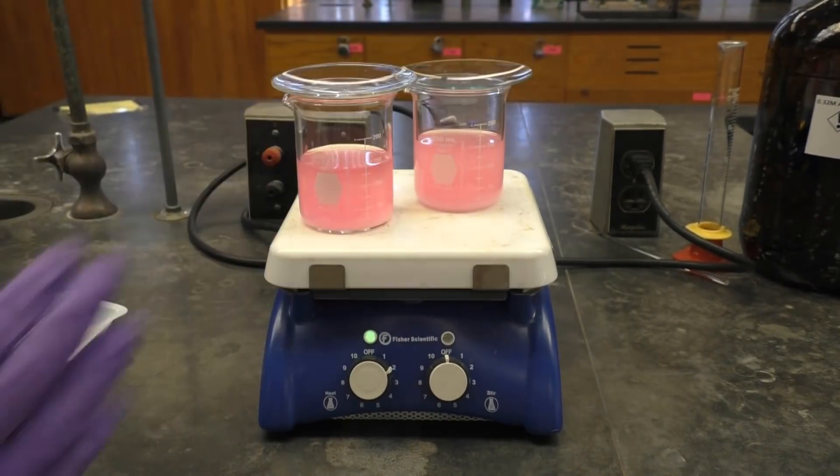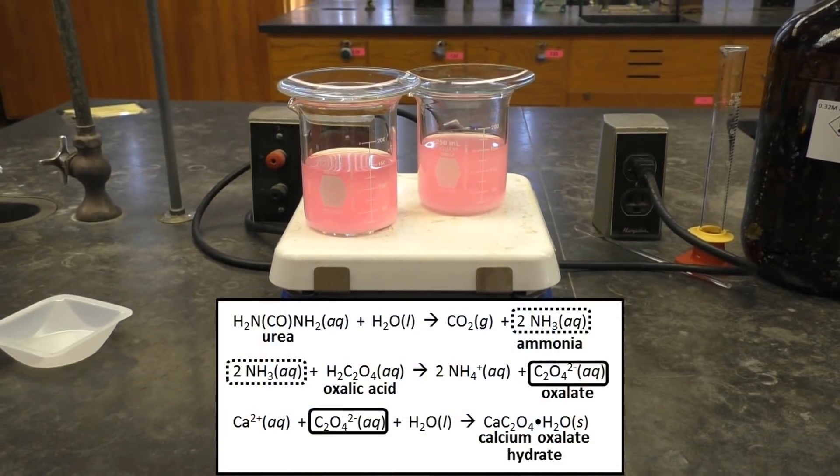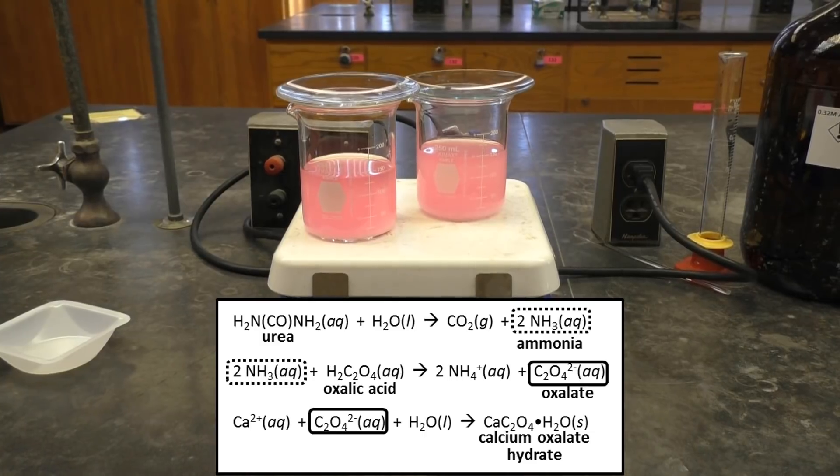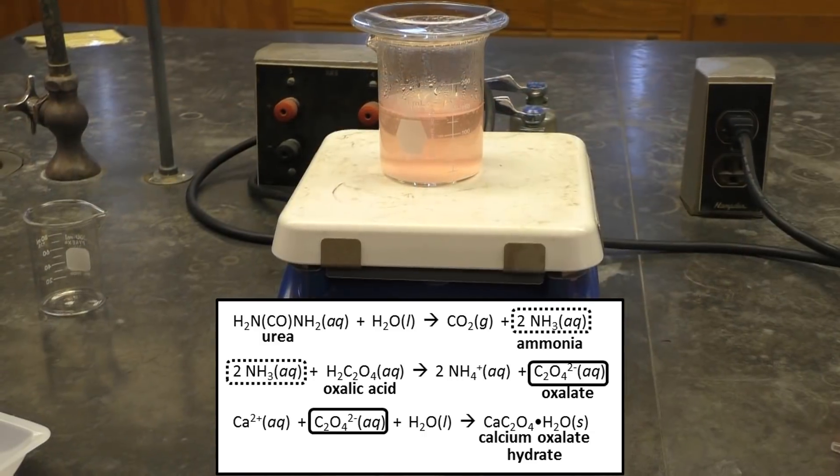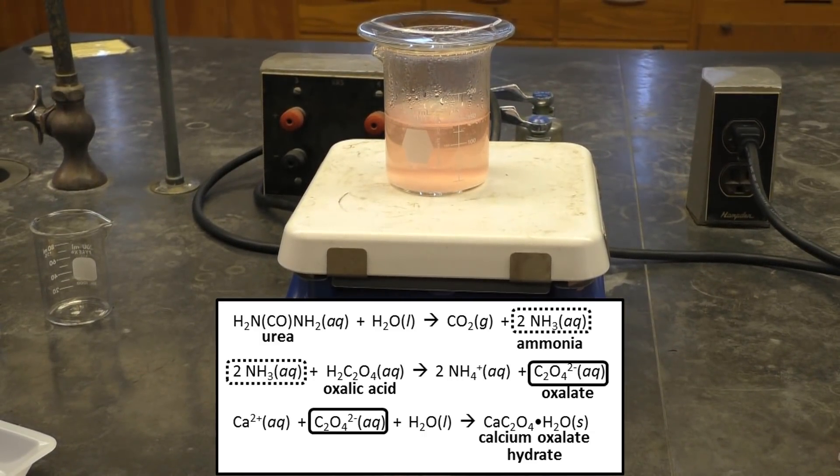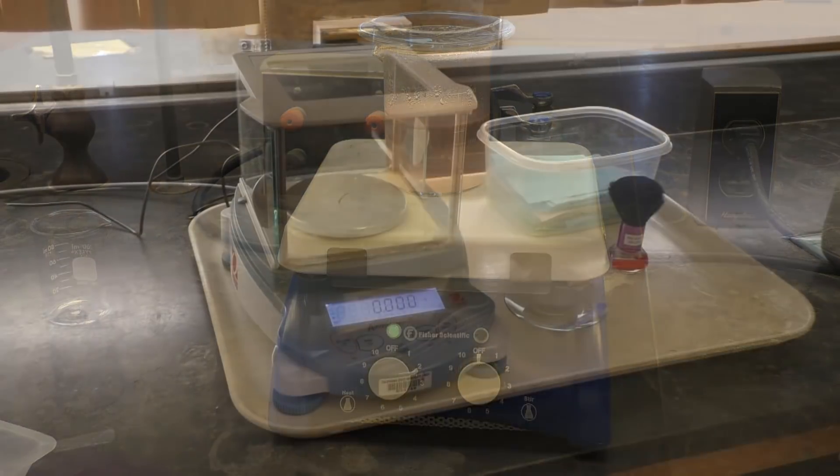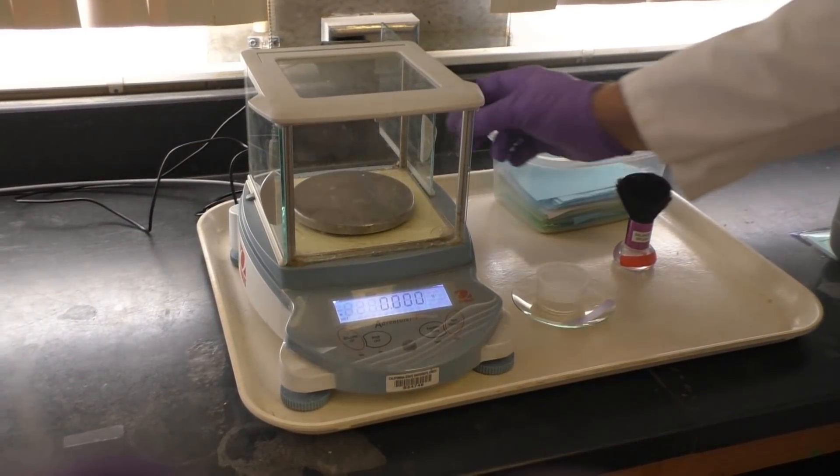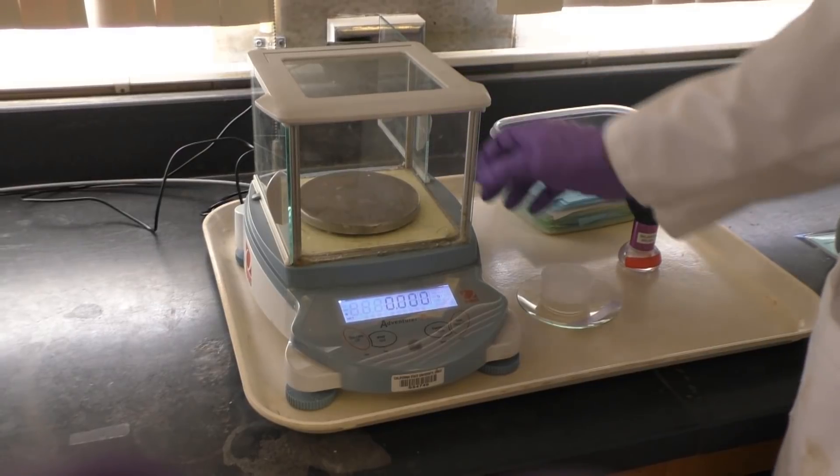You and your partner can both use the same hot plate to carry out the step. During this heating, the urea is reacting to form CO2 gas and ammonia. The ammonia is then deprotonating the oxalic acid from the ammonium oxalate. This then coordinates the calcium in your solution to form our desired precipitate: calcium oxalate hydrate.